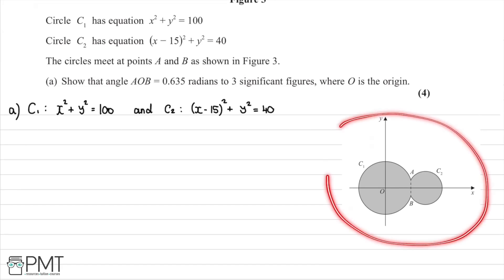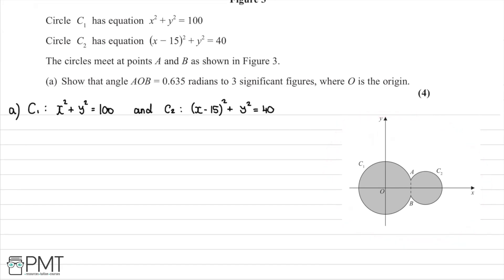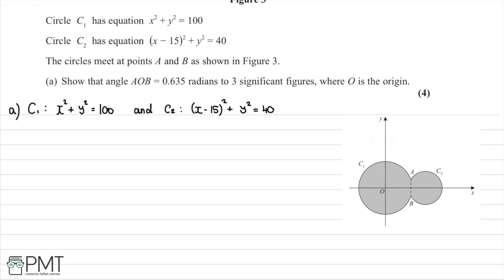We're showing a graph here, which I've copied down. We have circle C1 with equation x squared plus y squared equals 100, and the smaller circle C2 with equation x minus 15 all squared plus y squared equals 40. We're told the circles meet at points A and B, and we're asked to show that angle AOB equals 0.635 radians to three significant figures, where O is the origin.